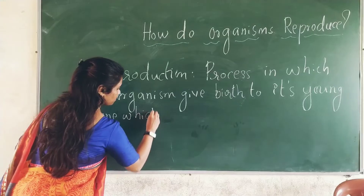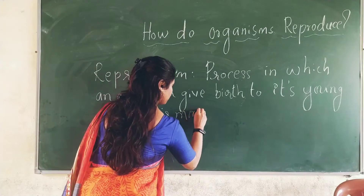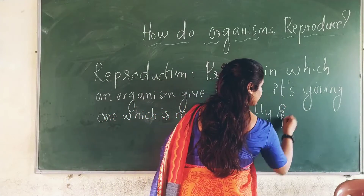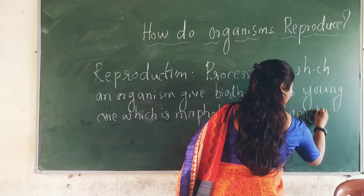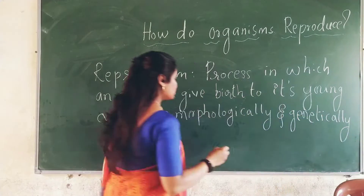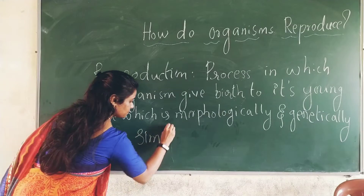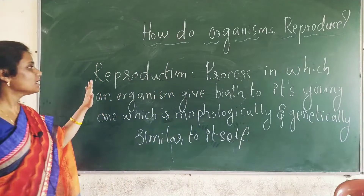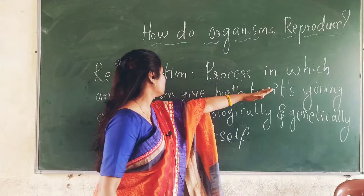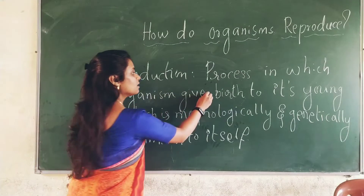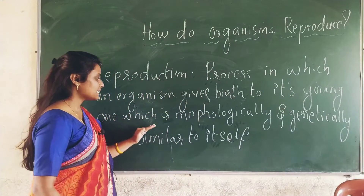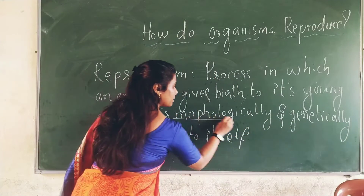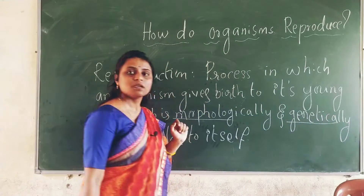The young one is morphologically and genetically similar to itself. So let us read once again: reproduction is a process in which an organism gives birth to its young one which is morphologically and genetically similar to itself.